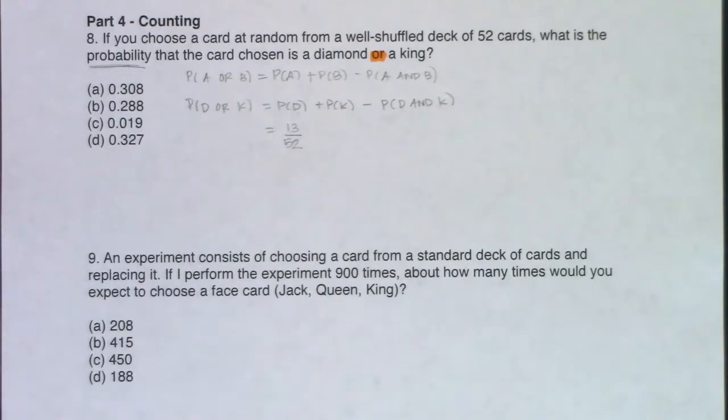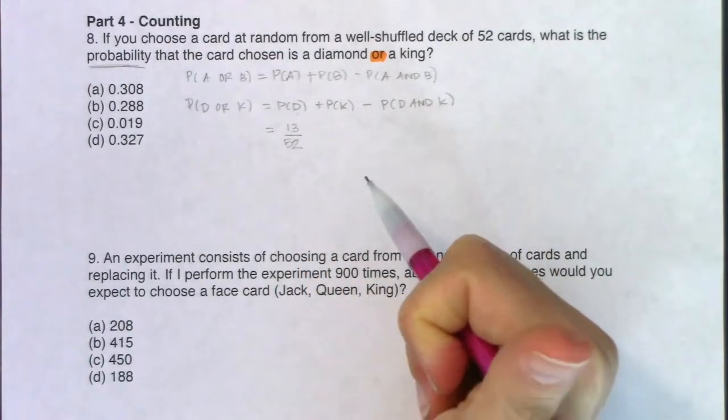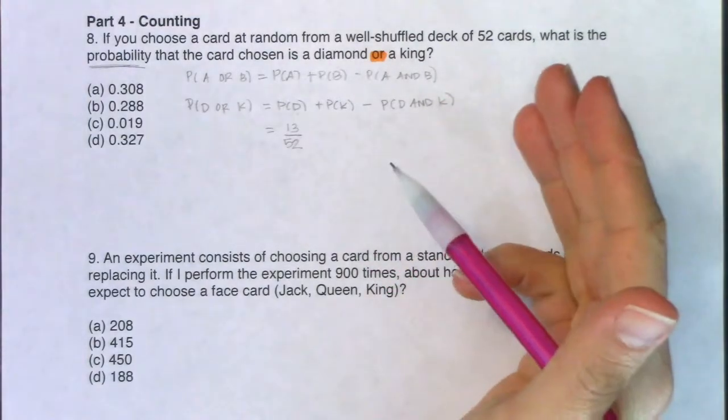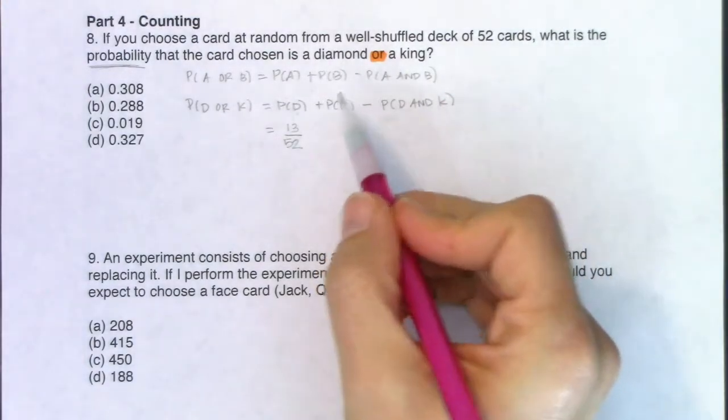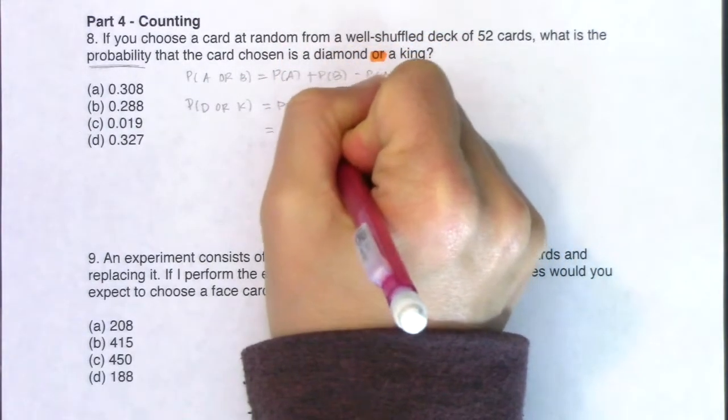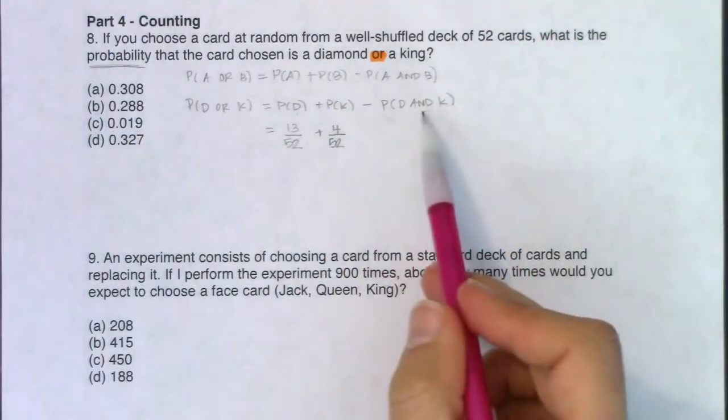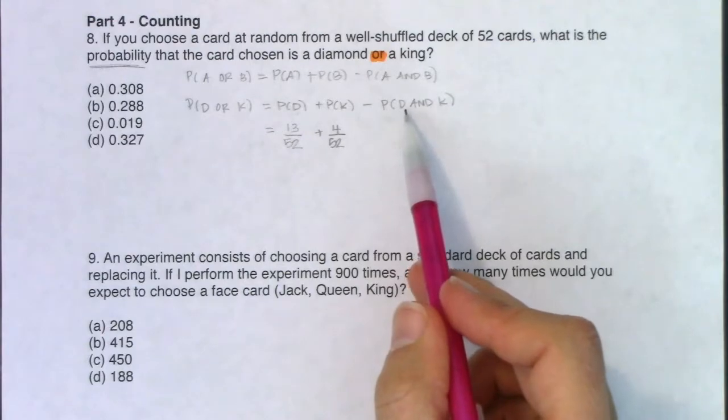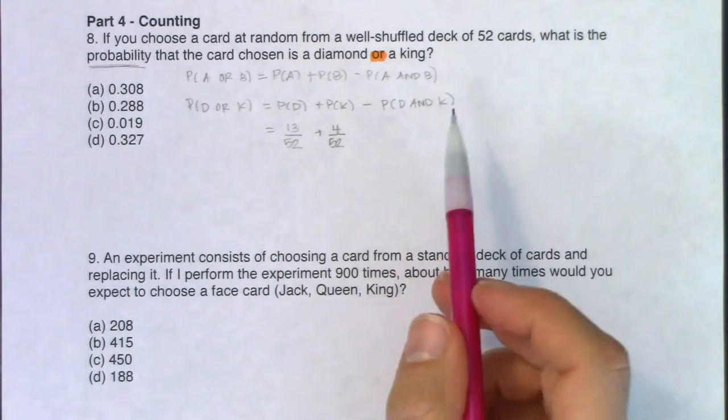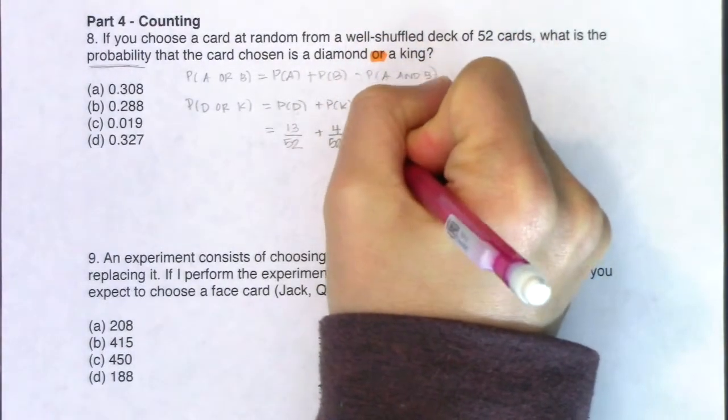So if I think about the kings, every individual card, there are four of them. So there are four kings in a deck because you have the king of diamonds, the king of hearts, the king of spades, and the king of clubs. So you have a king in each of your four suits. So I actually have four kings out of my 52 cards. And then we need to subtract out any overlap. Do I have any cards that are both diamonds and kings? And the answer is yes, I have the king of diamonds.